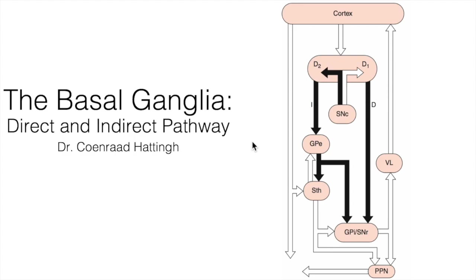They are complicated in their spatial anatomy — how they relate to one another in the deep white matter of the brain — and also in the circuitry and the parallel loops. A lot of the confusion is around the direct and indirect pathway in the basal ganglia. I wanted to find a nice resource on YouTube that I could link my students to, but I couldn't find anything that sufficiently explains the direct and indirect pathway.